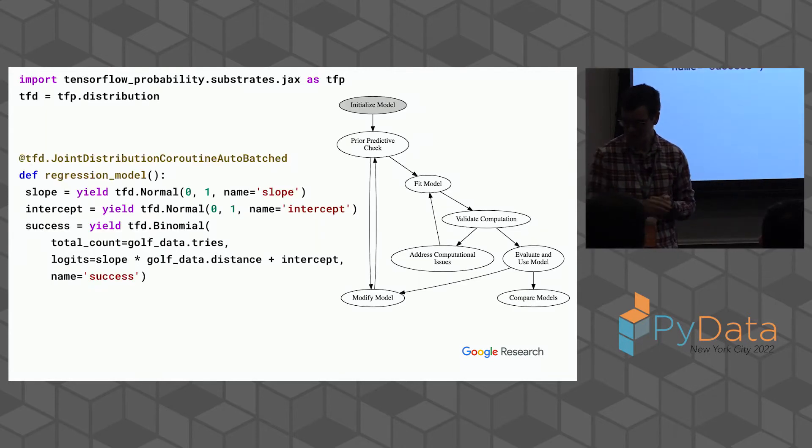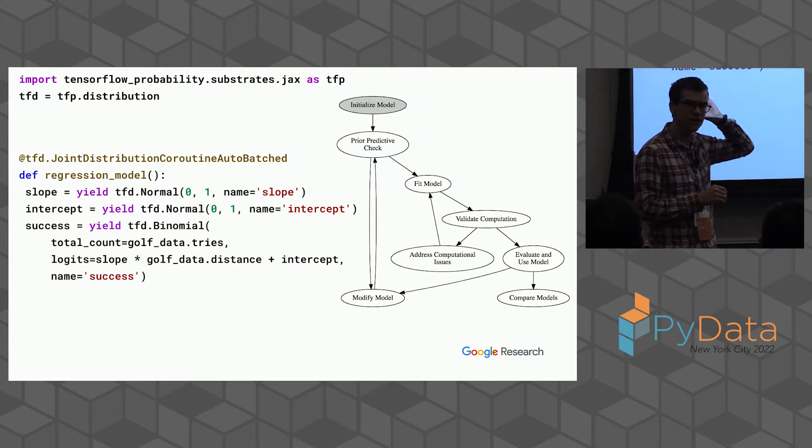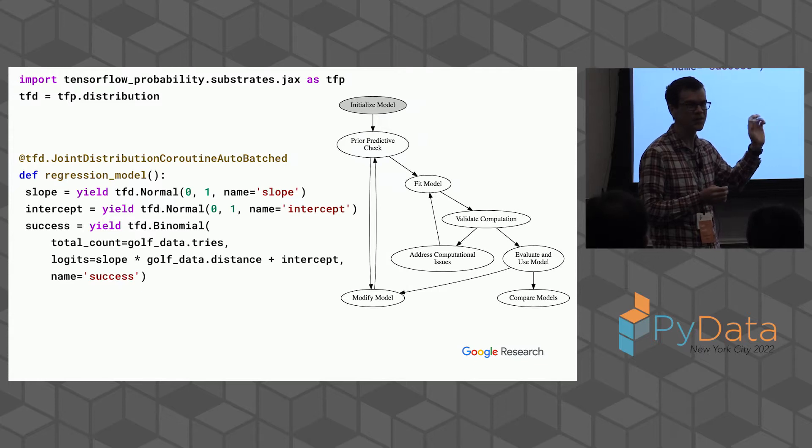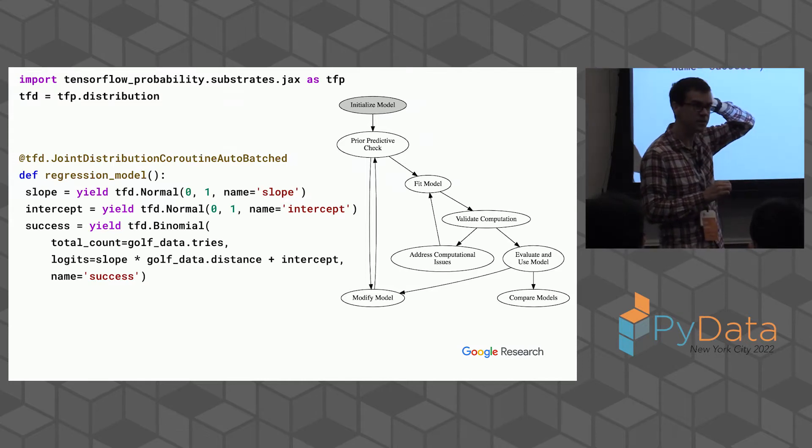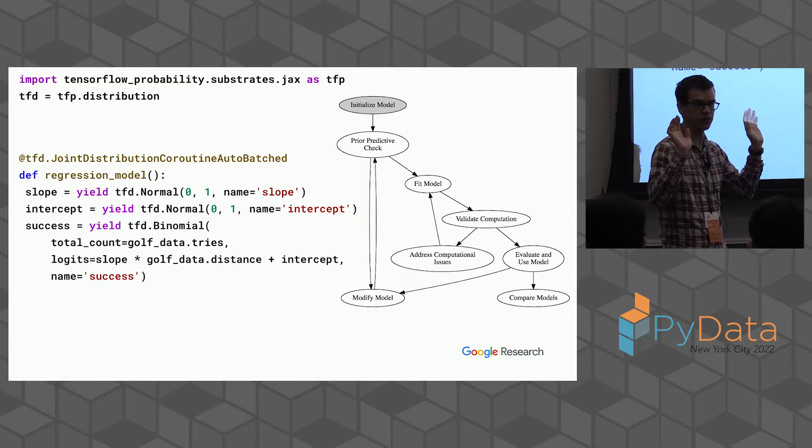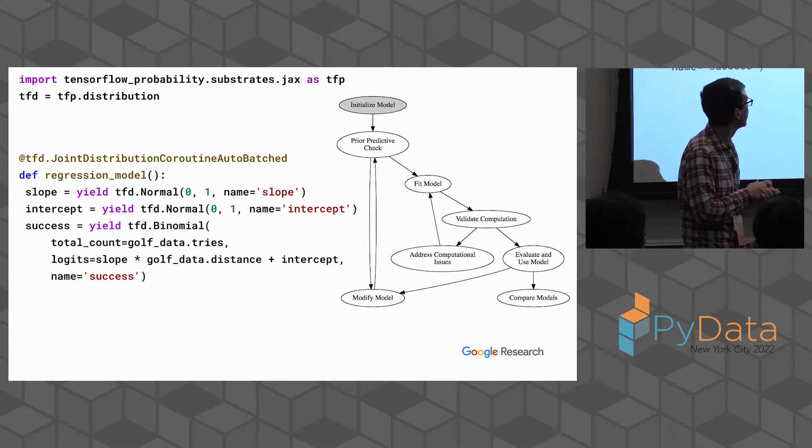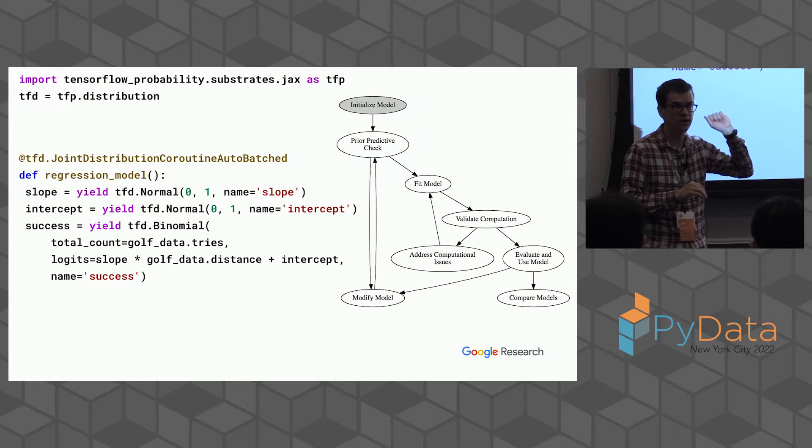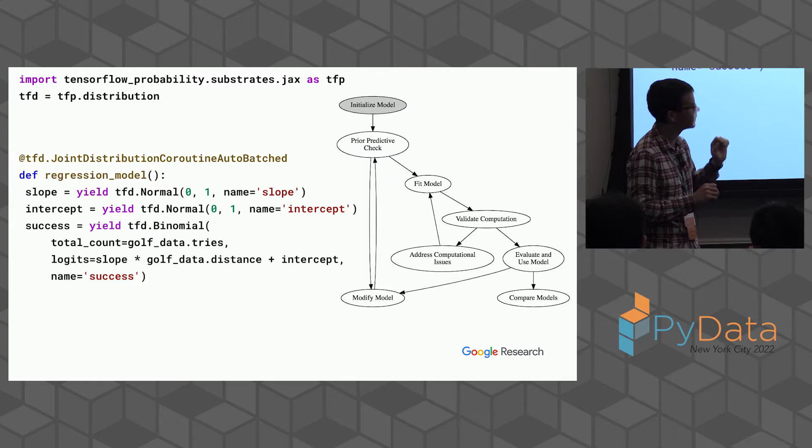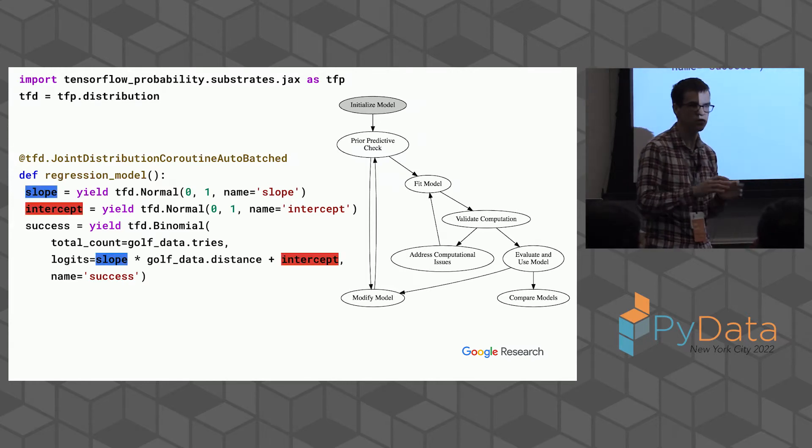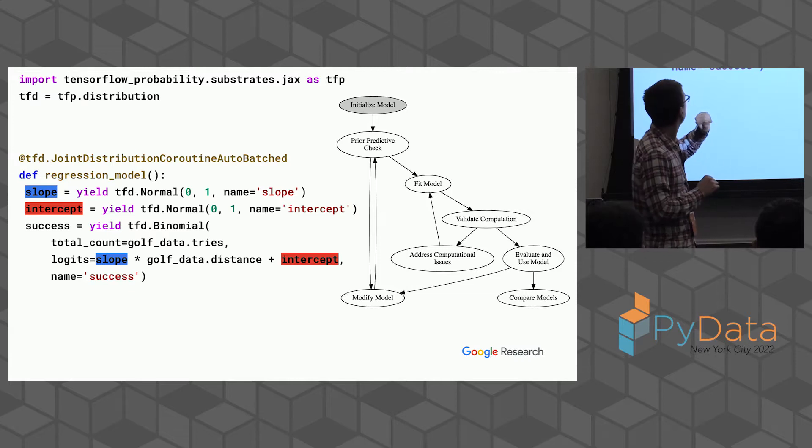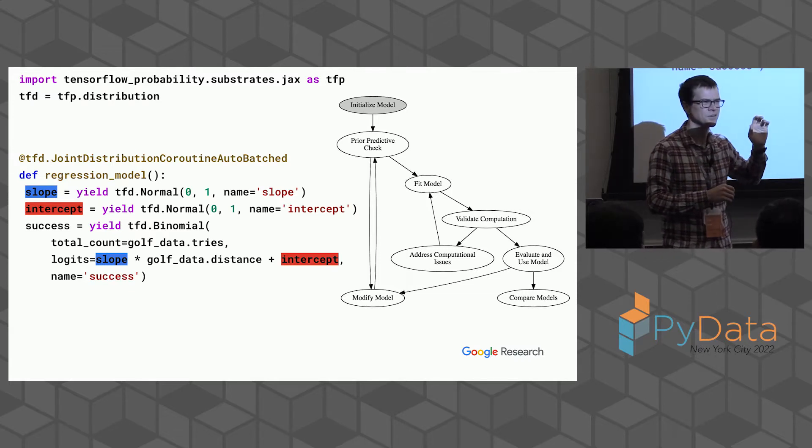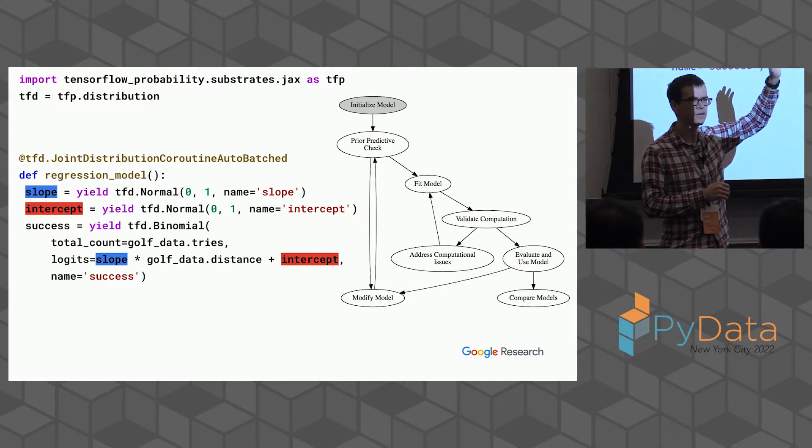Maybe we're given this data set and we want to build a model. We might turn to our Bayesian library. I'm using TensorFlow probability. It's called TensorFlow probability, but we've talked about trying to rebrand as tensor-friendly probability because it actually works on JAX. If you use this import statement, TFP substrates JAX, you get a version that everything is written in JAX.